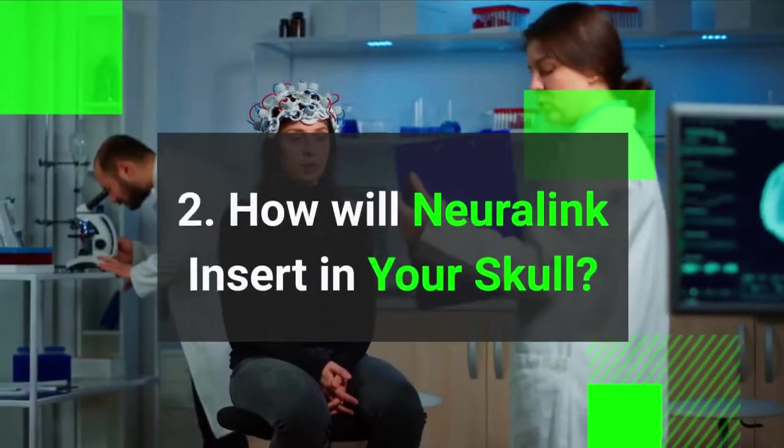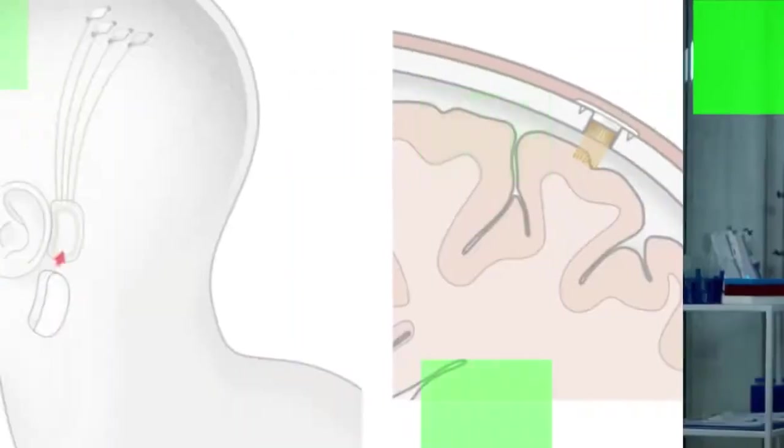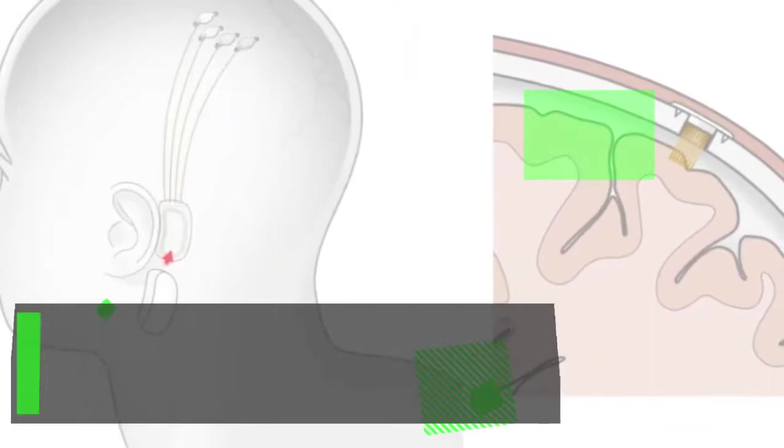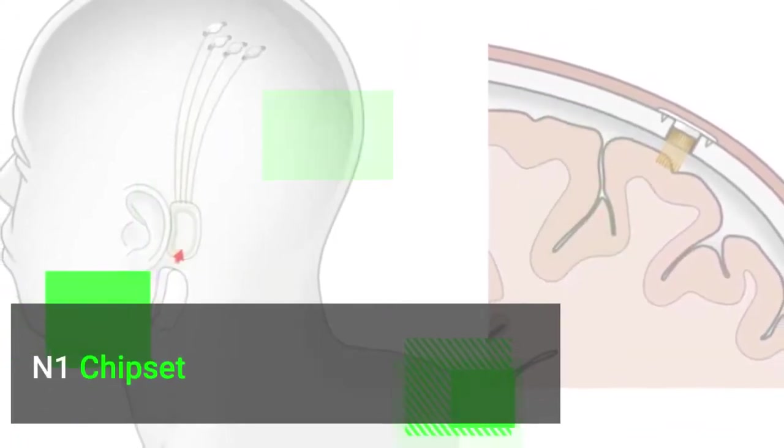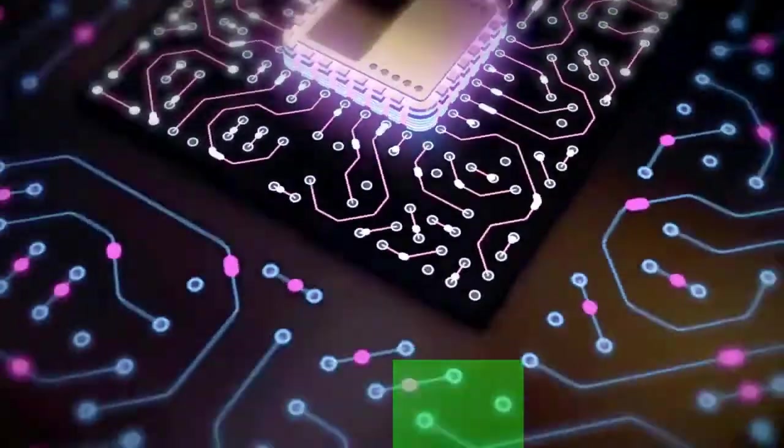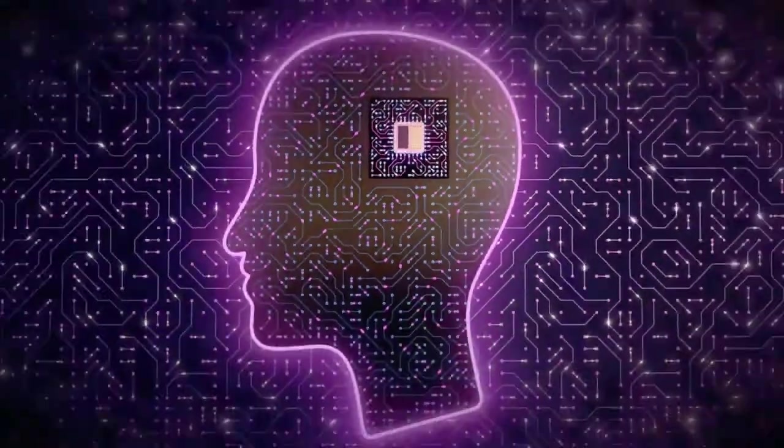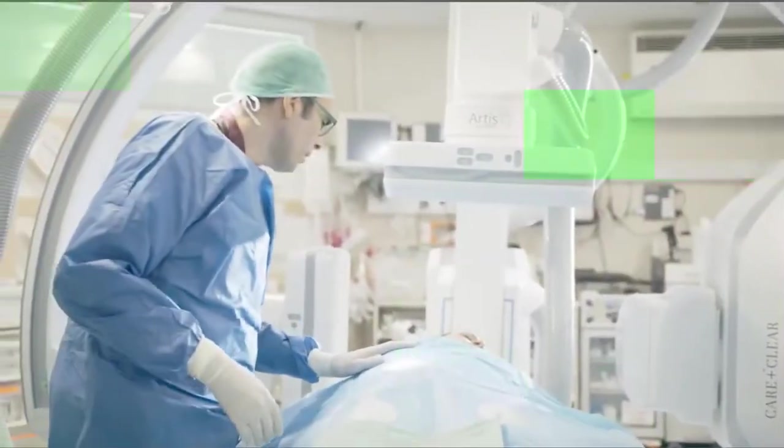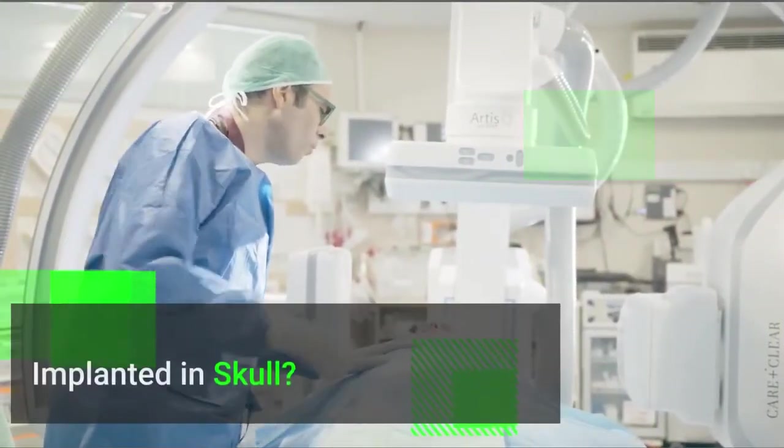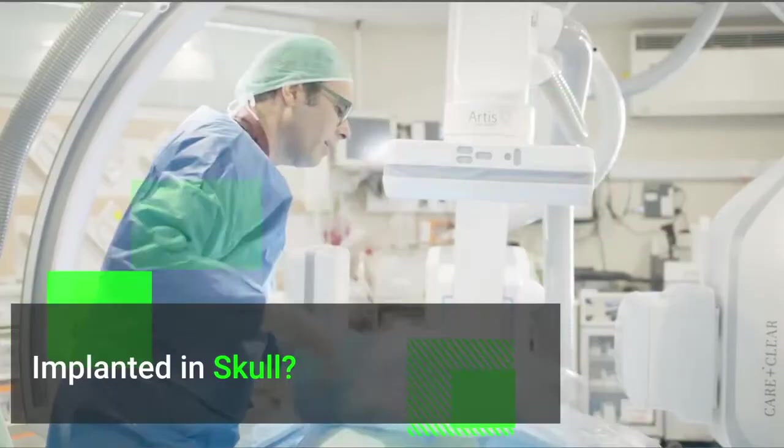How will Neuralink insert into your skull? Neuralink will be inserted in your skull with what is being called an N1 chipset, in Elon Musk's words. The chipset is 8 millimeters in diameter and has multiple wires housing electrodes and insulation for the wires. Okay, we have the setup, but how will it be introduced into our skull? Simple. These wires will be surgically placed inside our brain using a robot.